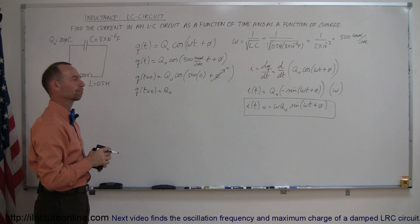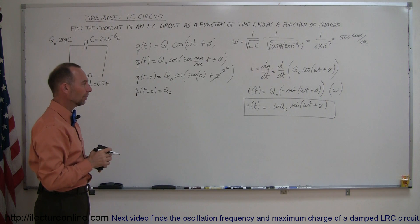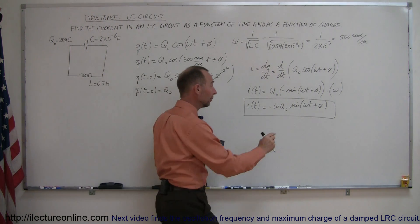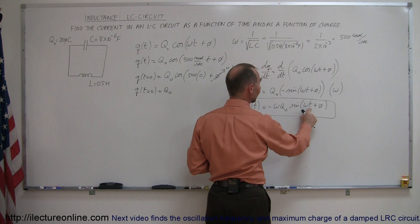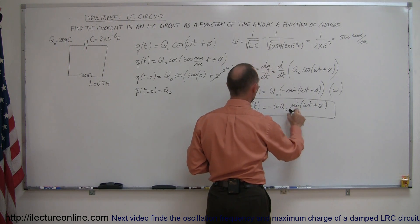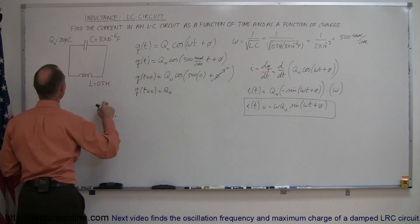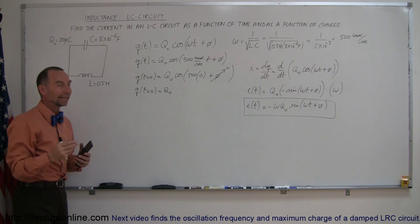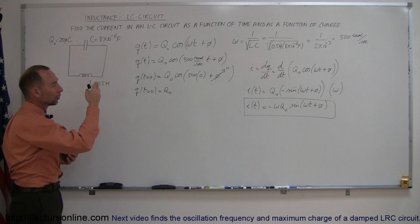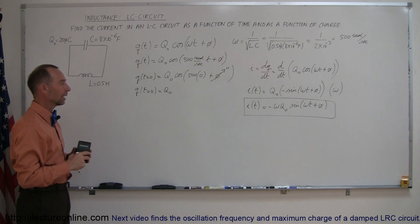This allows you to find the current at any time. What would the current be at T equals zero? If the phase angle is zero and time equals zero, the sine of zero is zero. So at that moment there would be no current flow at all. When the capacitor is fully filled with charge, there's no current flowing. After that, current begins to flow and increases as the sine function would dictate.